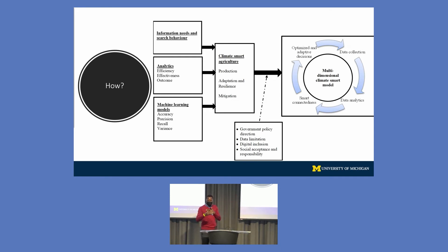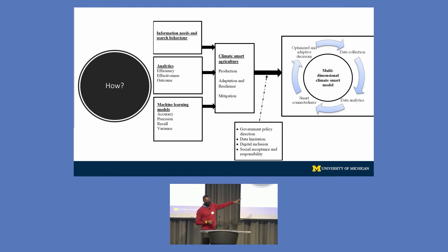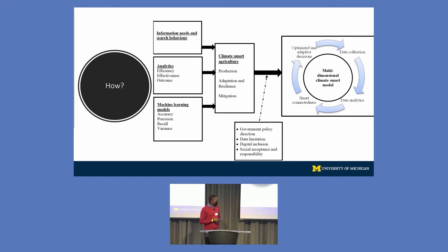Thereafter, we have a model that can interact with the environment and constantly get information from it to inform decisions a farmer can take. This will also be done with the realization that data is a very big challenge, especially in the African continent. One presentation indicated that chances of someone being involved in a study in Africa is about one in 100,000 people, compared to one in 1,000 in the US. So data will be a problem, but hopefully we will be able to handle that.